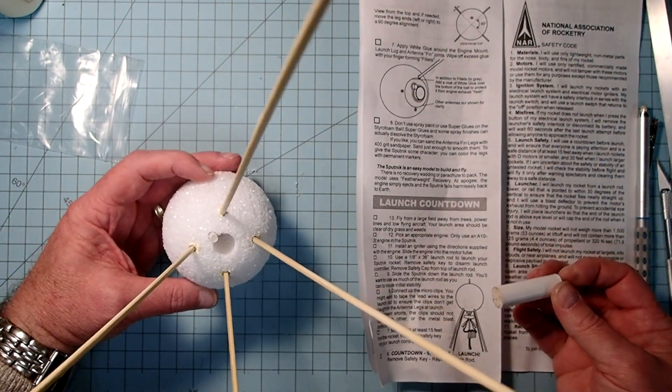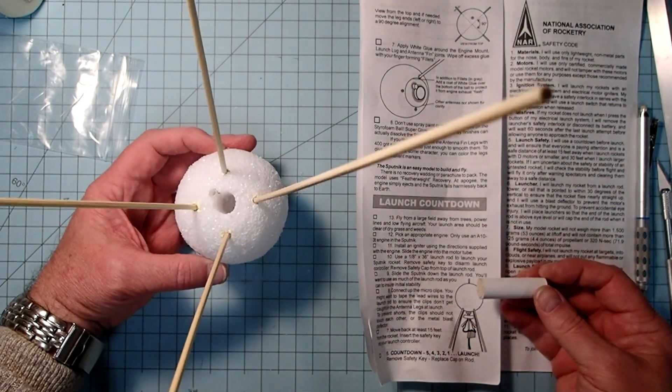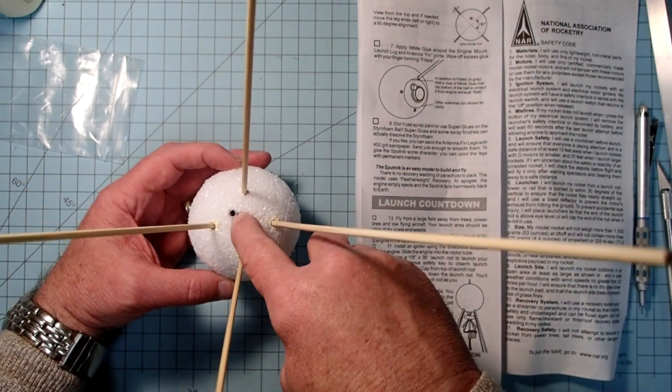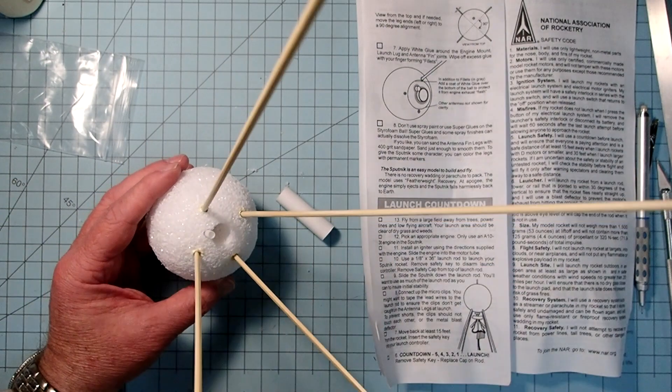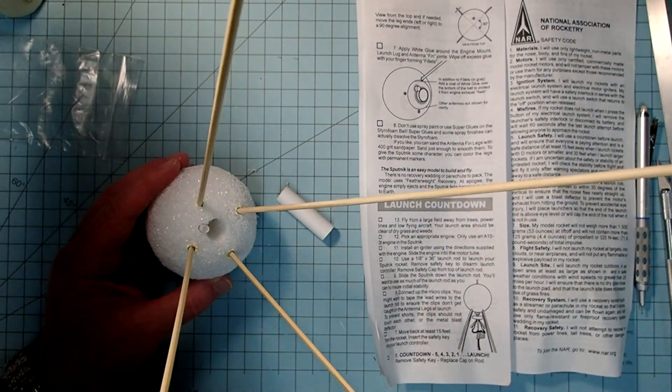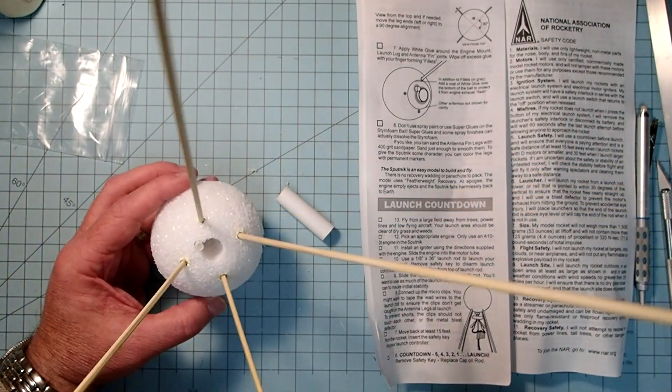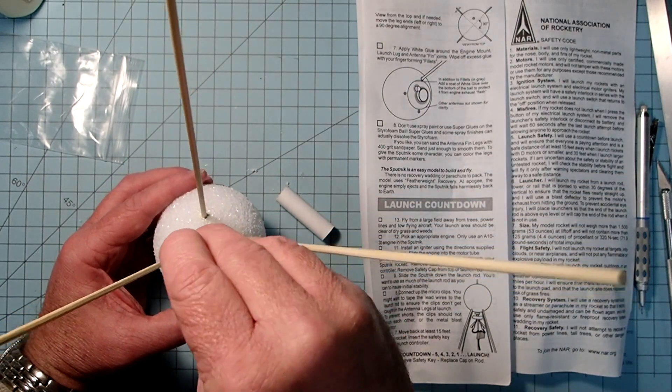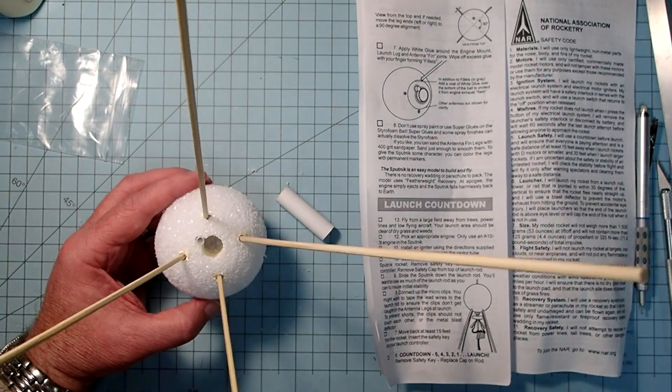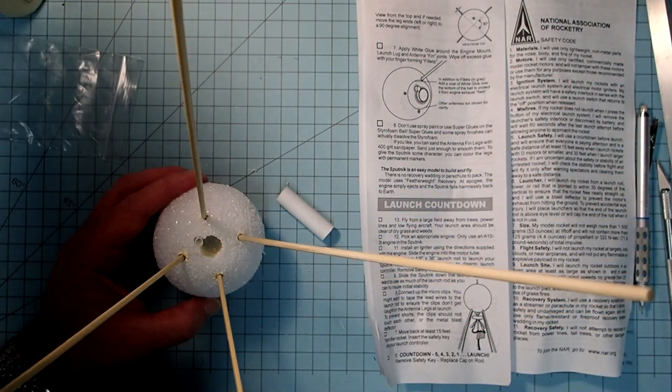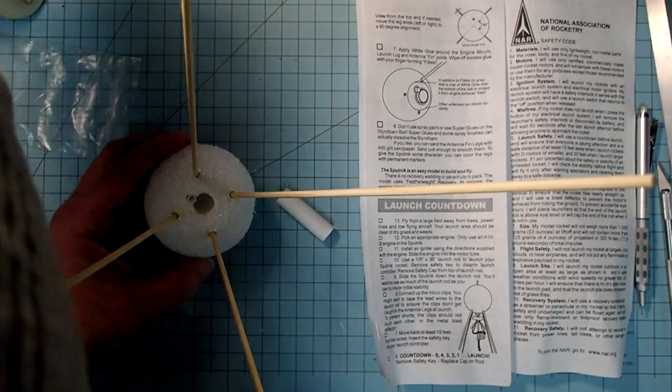Now, down inside there, the launch lug is actually exposed inside there. And now I'm just going to take some more of my wood glue and spread that around there a bit. And making sure that I get some on the launch lug that's exposed.